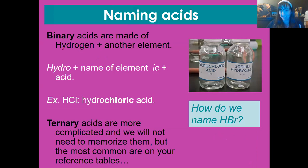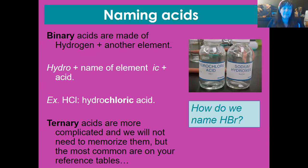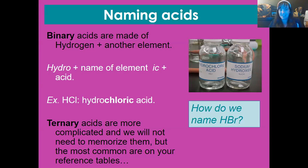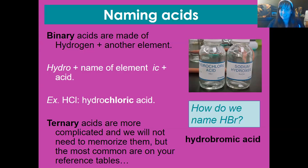Now let's switch to naming acids and bases. The easiest way is to look on your reference tables, but here's the method if you encounter something not listed there. For binary acids — just hydrogen plus one other element — the formula is simple: say 'hydro,' then the name of the element but ending in 'ic,' then say 'acid.' So HCl is hydrochloric acid: hydrogen and chlorine, change the ending to 'ic,' say acid. How about HBr? You say 'hydro,' the element is bromine, end it in 'ic,' so hydrobromic acid. That's how you name binary acids!